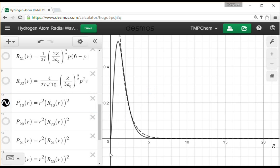And that's exactly what we see. It goes up like R squared, reaches a maximum, and decays away. That maximum in probability occurs at R equals 1, or 1a0, the Bohr radius, for the 1s orbital.